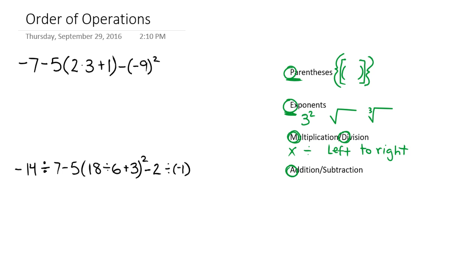And finally, we have addition and subtraction. So again, after we've done all of our parentheses, we've done all of our exponents, we've done all of our multiplication and division, we move to our addition and subtraction. And again, these are much like the multiplication and division, where we move from left to right performing these operations. So we might not always do all of our addition before we do our subtraction — we could do some subtraction, into some addition, into some more subtraction.